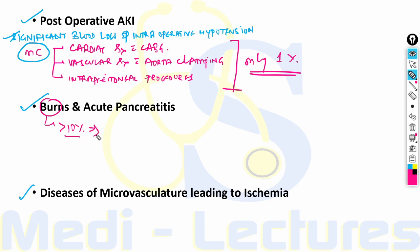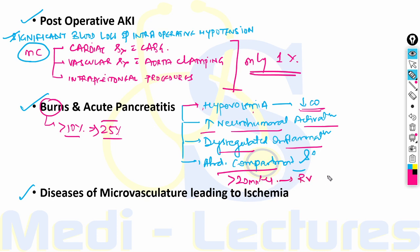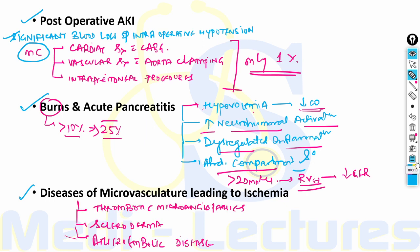Burns and acute pancreatitis can lead to AKI through hypovolemia causing severely decreased cardiac output, increased neurohumoral activation, dysregulated inflammation increasing risk of sepsis and acute lung injury, and risk of abdominal compartment syndrome due to massive fluid resuscitation — characterized by intra-abdominal pressures of more than 20 mmHg causing renal vein compression and decreased GFR. Thrombotic microangiopathies, scleroderma, and atheroembolic disease affect microvasculature, while large vessel diseases include renal artery dissection, thrombosis, thromboembolism, and renal vein compression or thrombosis.